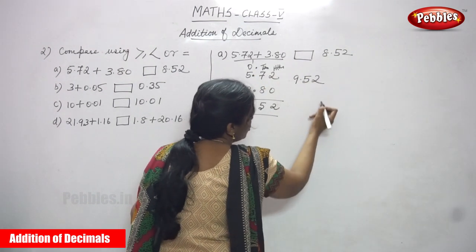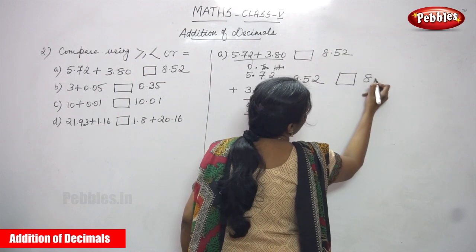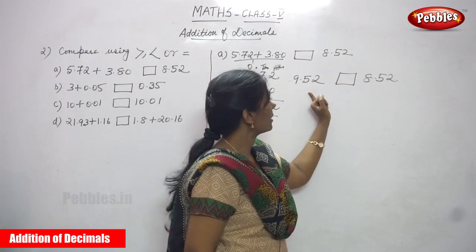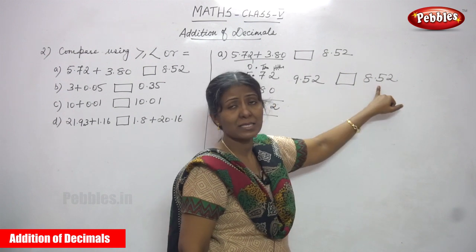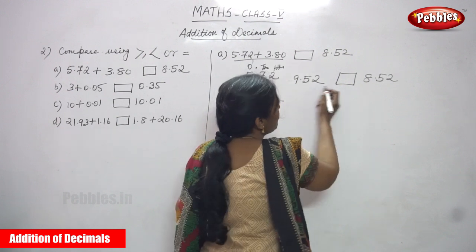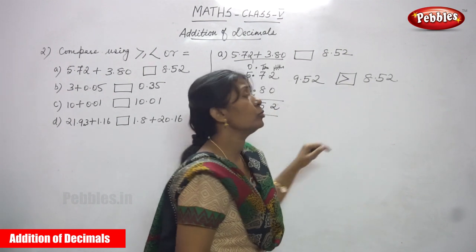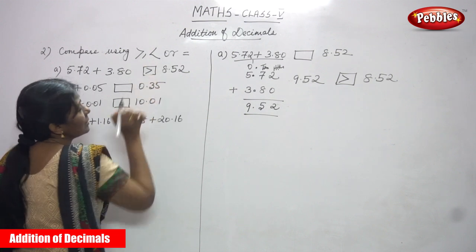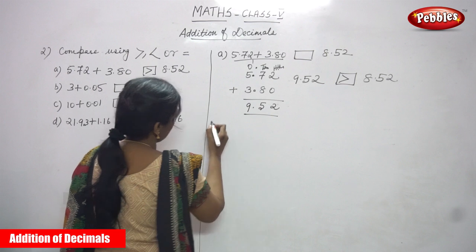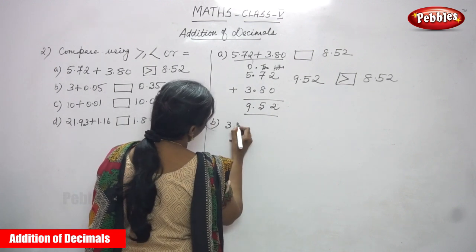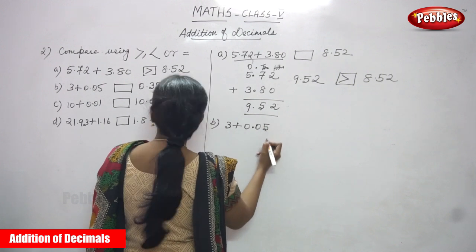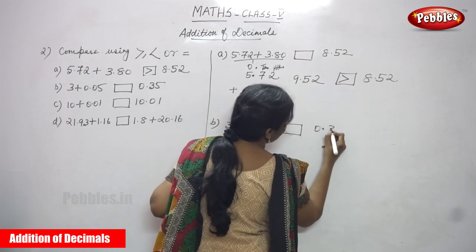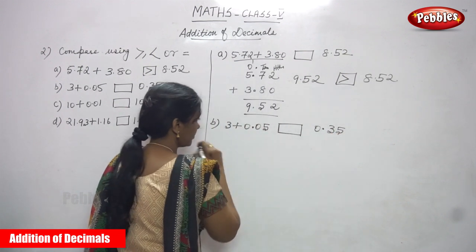You added the two numbers and got 9.52. The given answer in the box is 8.52. So 9.52 is different from 8.52 — 9.52 is greater than 8.52. So you have to put a greater sign in that box. Now for the second question, B.